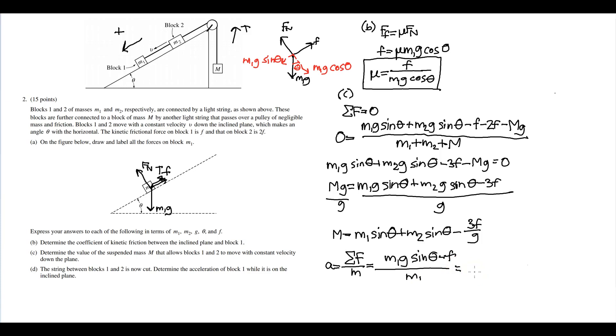And you can split the fraction again and you'll get g sine theta minus f over m1. Either of these two answers can work.